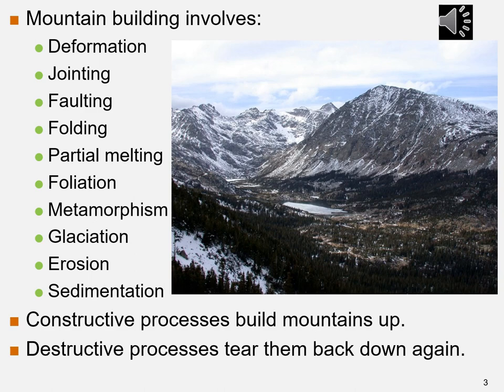Mountains are born and have a finite lifespan. Young mountains are high, steep, and still grow upward, such as the Himalayas. Middle-aged mountains are dissected by erosion, like the Ural Mountains in Russia. Old age mountains, such as the Ouachita Mountains of Oklahoma and Texas, are deeply eroded and often buried.